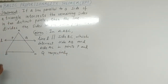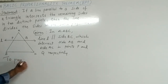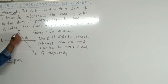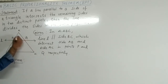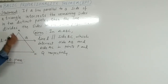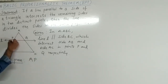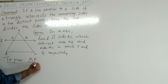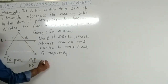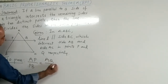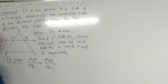Now, to prove: we have to show that this line divides the remaining two sides in the same proportion. That is, we have to prove that AP upon PB is equal to AQ upon QC.